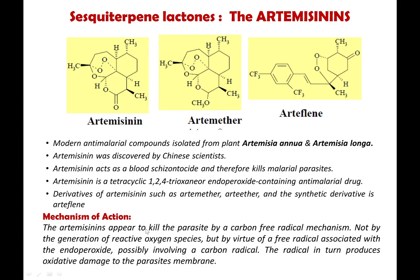The sesquiterpene lactones — artemisinins — are obtained from Artemisia annua and Artemisia longa, discovered by Chinese scientists. They act as blood schizonticides and cause clinical cure. Artemisinin is a tetracyclic 1,2,4-trioxane with an endoperoxide. The mechanism of action is through a carbon free radical mechanism — not by reactive oxygen species generation — but by virtue of a free radical associated with the endoperoxide, possibly involving a carbon radical, which in turn produces oxidative damage to the parasite's membrane.